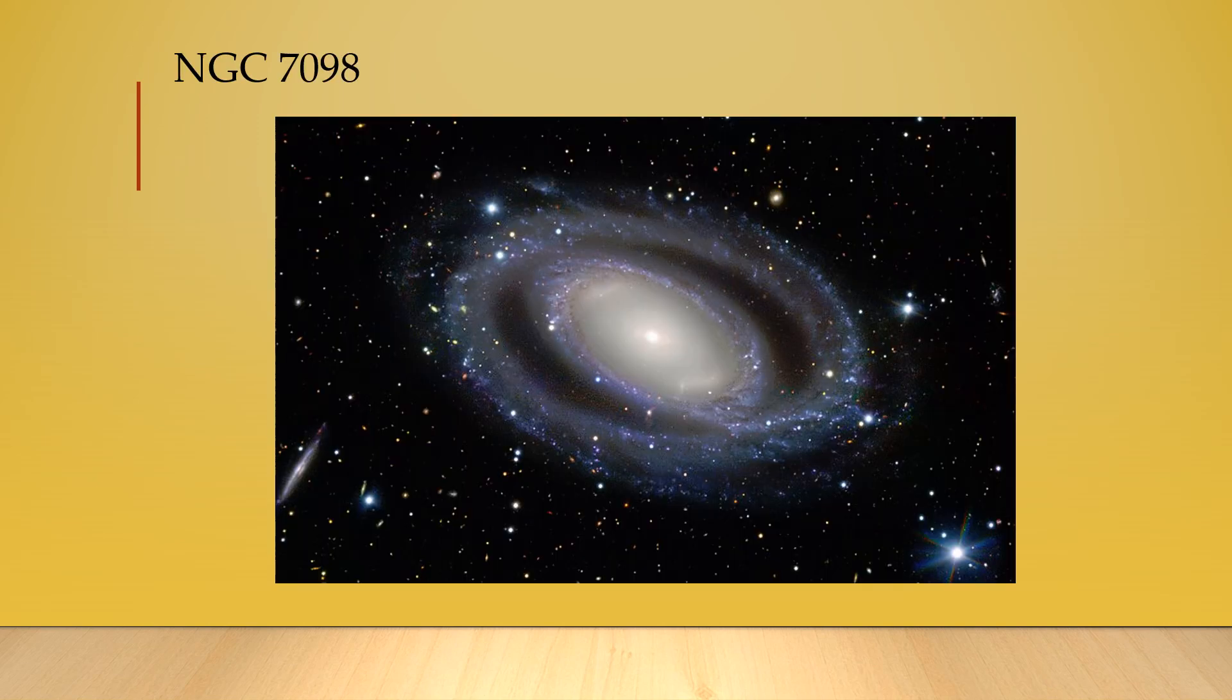NGC 7098 is unusual for a spiral galaxy. Its arms have wound completely around it, creating two rings.